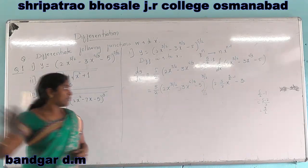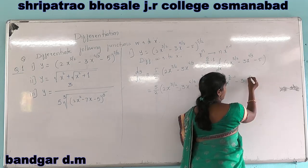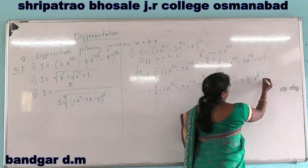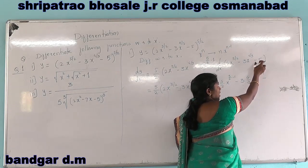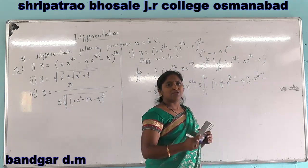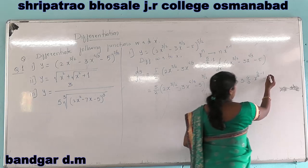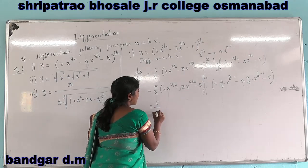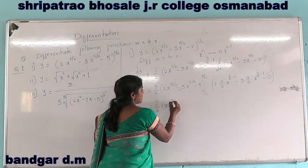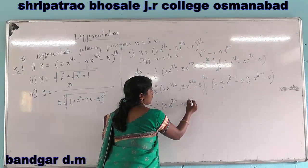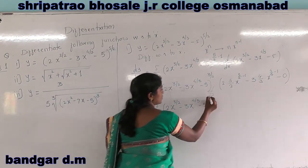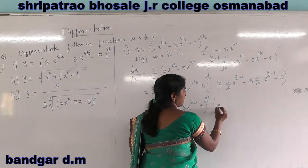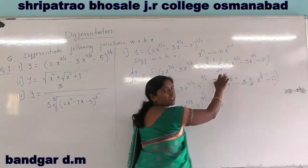For the x raised to 4 by 3 term, its derivative is 4 by 3 into x raised to 4 by 3 minus 1. Minus derivative of minus 5: since 5 is a constant with no variable, its derivative is 0. So dy by dx equals 5 by 2 into x raised to 3 by 2, minus 3x raised to 4 by 3, minus 5, raised to 3 by 2, into 2. The 2 cancels and 3 cancels, giving 3x raised to 3 by 2 minus 1, which is x raised to 1 by 2.